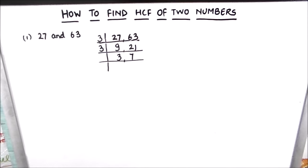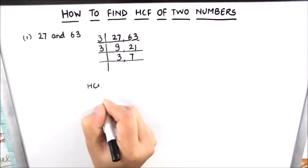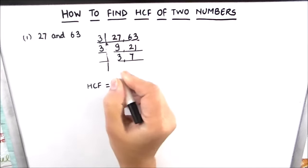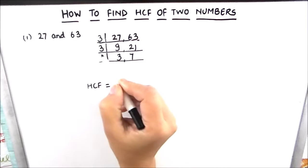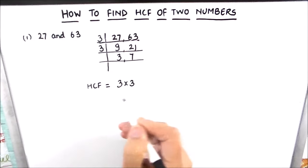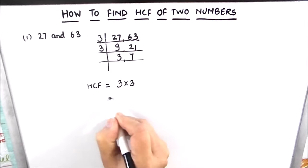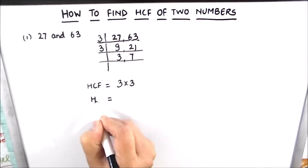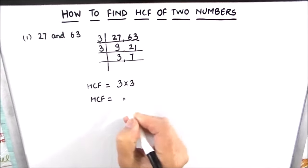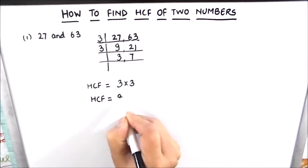Now there is no common factor which divides 3 and 7 fully, so we stop here. The HCF will be the product of the common factors. So 3 times 3 is the HCF of the two numbers. The HCF of 27 and 63 is 9.